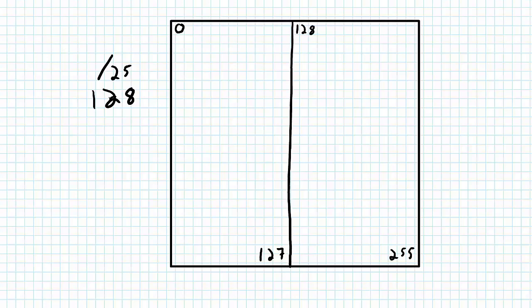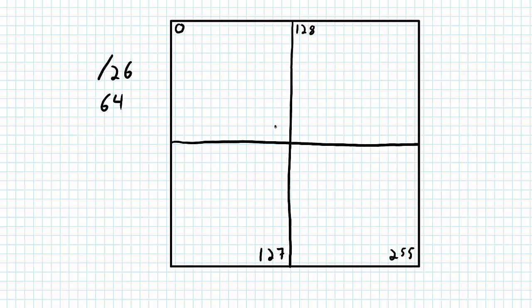I'm going to keep doing this breakdown until I get to the smallest possible boxes, and then use that box with lots of little tiny boxes to carve out the pieces I need for each individual LAN. The next step breaks each subnet in half to give me four slash 26 networks, each with 64 IP addresses: 0 to 63, 64 to 127, 128 to 191, and 192 to 255.